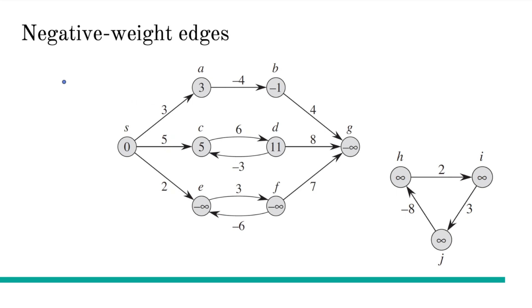In a directed graph like this, there can be some negative weights. For example, the cost of going from vertex A to vertex B is minus 4, the cost of going from vertex D to vertex C is minus 3, and so on. Usually when we have negative weights in a directed graph like this, this is not a problem.